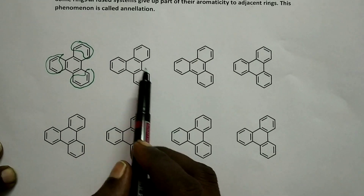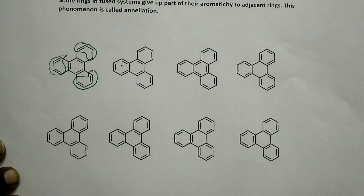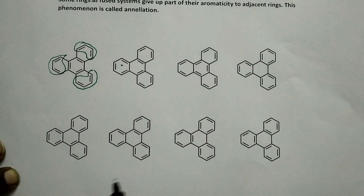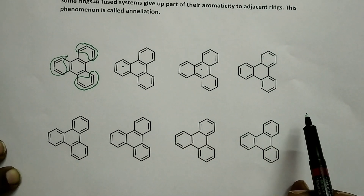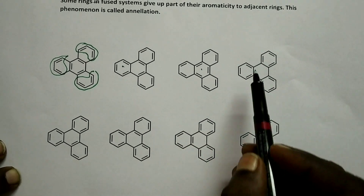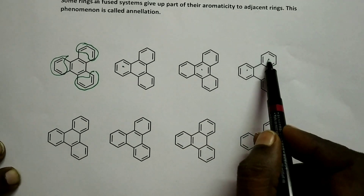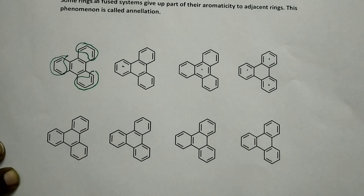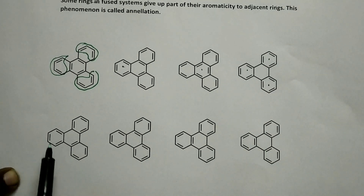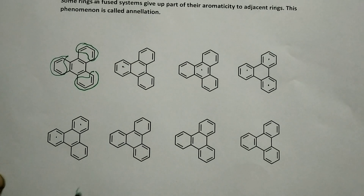Look at this — only this ring is benzene. And here, only the center ring is benzene. In some structures, three benzene rings appear out of the total four rings, and in others two rings are benzene rings.